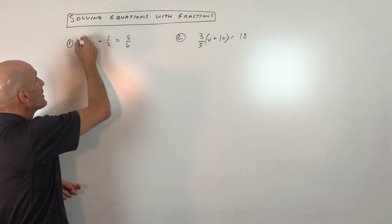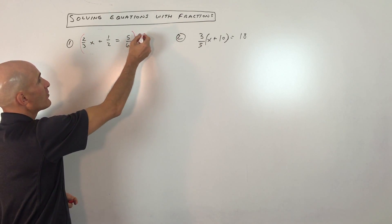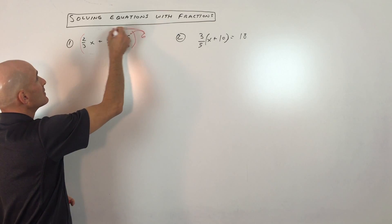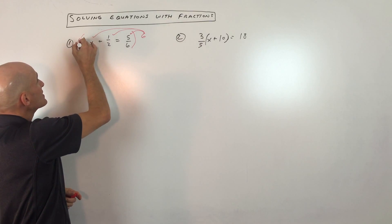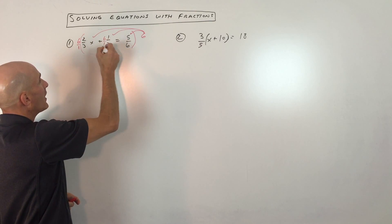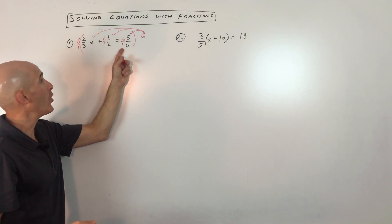So what we're going to do is we're going to multiply this entire equation by 6. When you multiply by 6, you're multiplying everything in the equation by 6, each of the terms. When you multiply by 6, it's like multiplying by 6 over 1, because anything divided by 1 is itself. So you can always write a whole number as a fraction by putting it over 1.